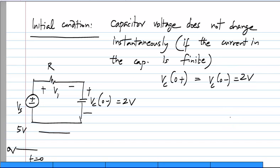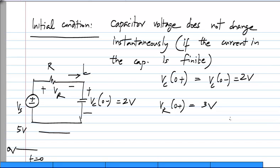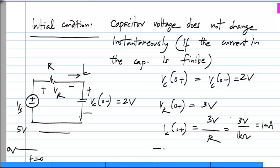If you are interested in Vr, the initial condition just as the step is applied: Vr = Vs − Vc, so if Vs is 5 volts and Vc is 2 volts, Vr(0+) = 3 volts. And if Ic is of interest, Ic is the voltage across the resistor divided by R. So the initial condition on the current is 3 volts divided by R, and if R is 1 kΩ that is 1 mA. You can find the initial condition directly from the circuit quite easily.